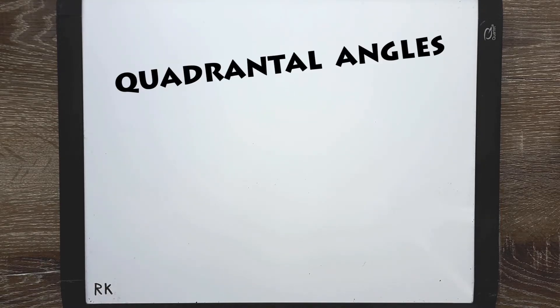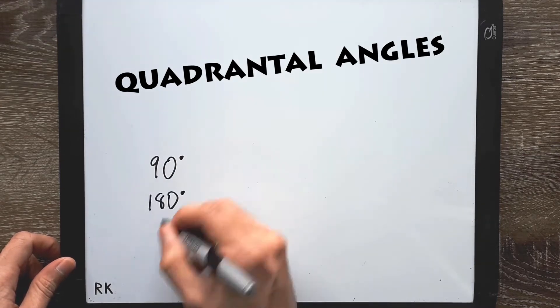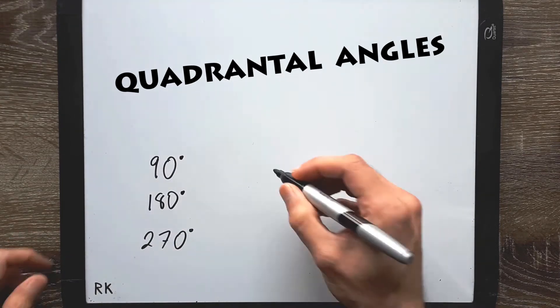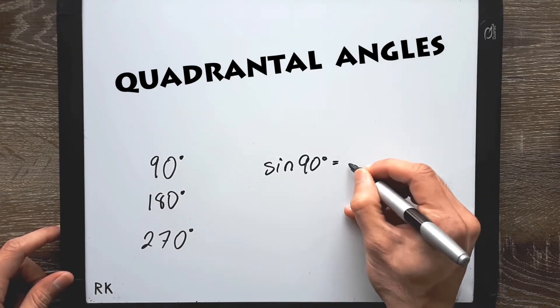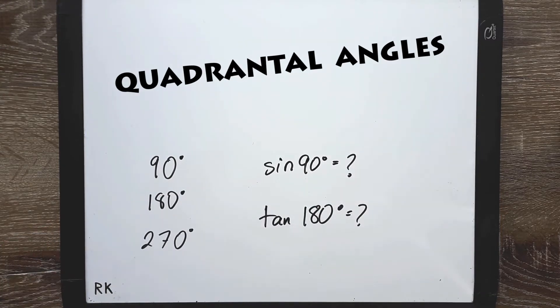Today we'll look at quadrantal angles like 90 degrees, 180 degrees, and 270 degrees. And we'll work out some trigonometric ratios for them, like the sine of 90 or tangent of 180.